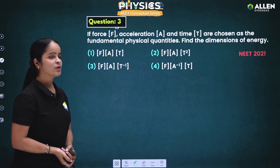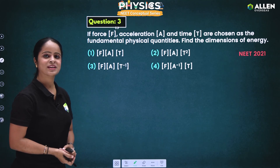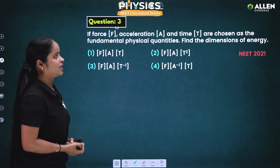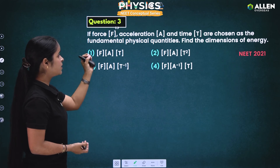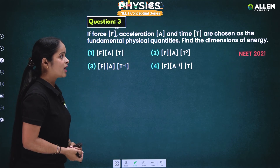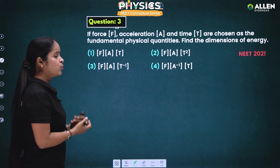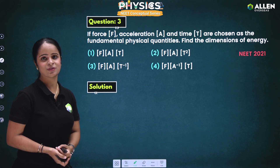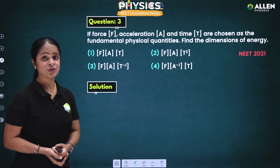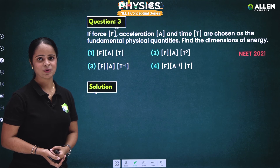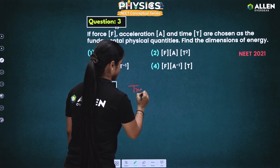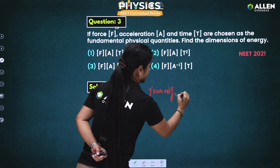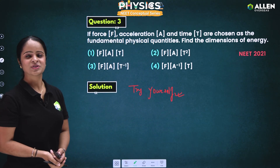In the next slide, we have another NEET 2021 question: if force F, acceleration A, and time T are chosen as the fundamental physical quantities, find the dimensions of energy — with four options given. Since we have discussed so much about dimensional formula, I am not going to solve this question for you. Try it yourself and don't forget to send me the answer in the comment box — I am waiting!